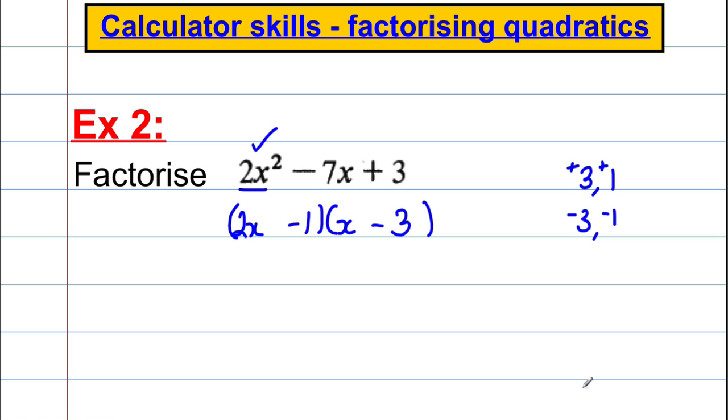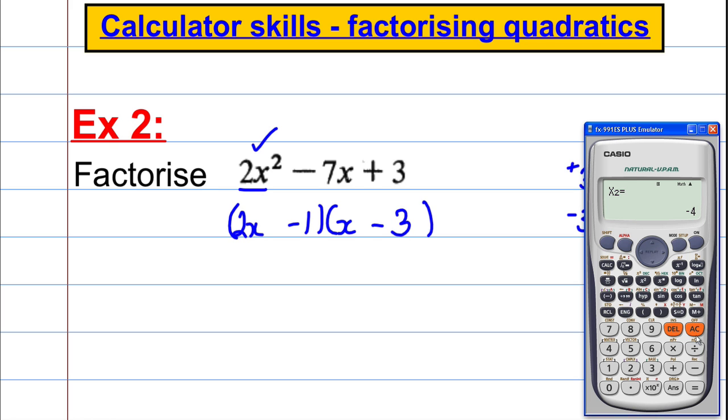You should be able to do that, but let's check on the calculator. Again, we're going to go to mode, equation and quadratic, which is number 3. It's 2x squared, so 2 for A, negative 7 for B and positive 3 for C. And it tells us the solutions that x is 3 and x is a half.